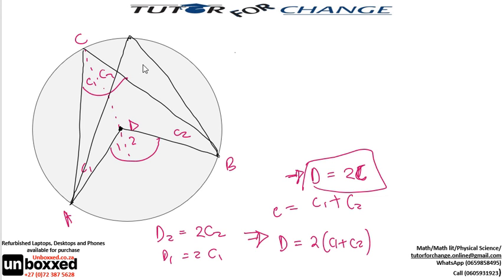If this is 2x, then we have x here, then we also have x here. That's how we prove this theorem.